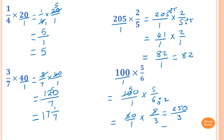Then of course I need to write it as a mixed numeral. So 3 goes into 250: 3 goes into 25 is 8 times, because 8 times 3 is 24, so the remainder is 1. Then 3 goes into 10 is 3 times, because 3 times 3 is 9, so the remainder is 1. So 1 over 3. The answer is 83 and 1 third.